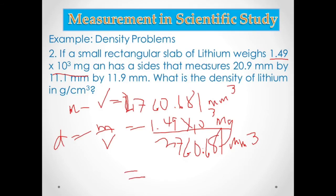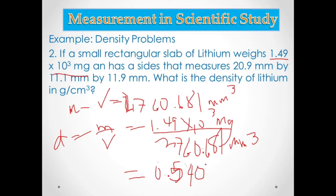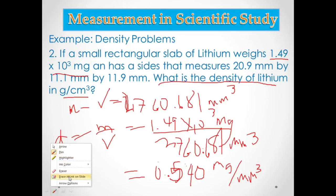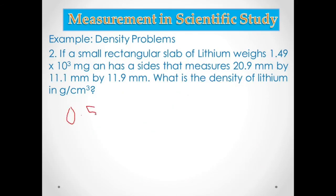Calculating: 1.49 × 10³ divided by 2,760.681 equals approximately 0.540. So the density is 0.540 mg per cubic mm. However, we are not yet done because the problem asks for density in grams per cubic centimeter, so we need to convert 0.540 mg/mm³ to g/cm³.